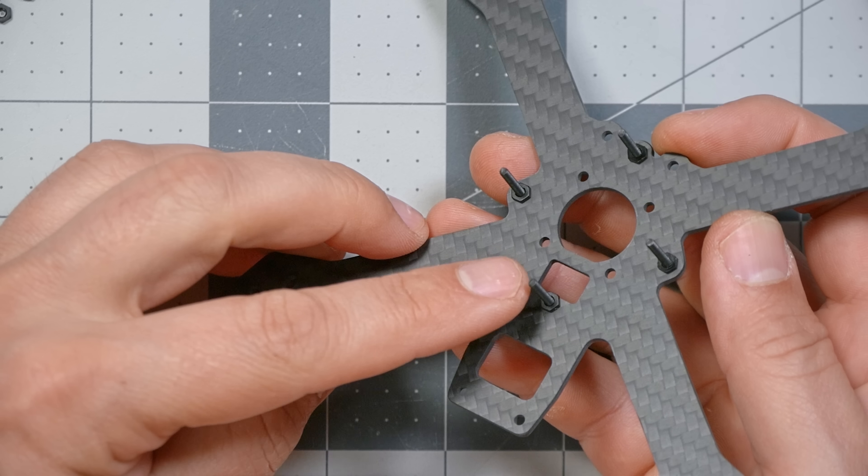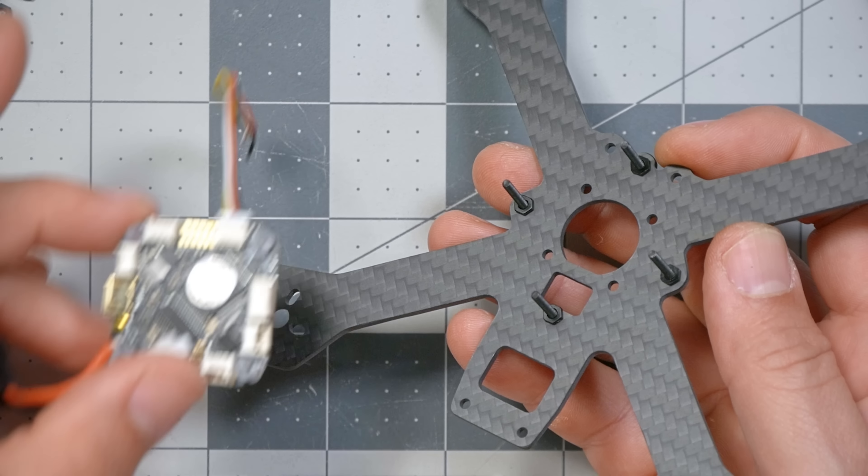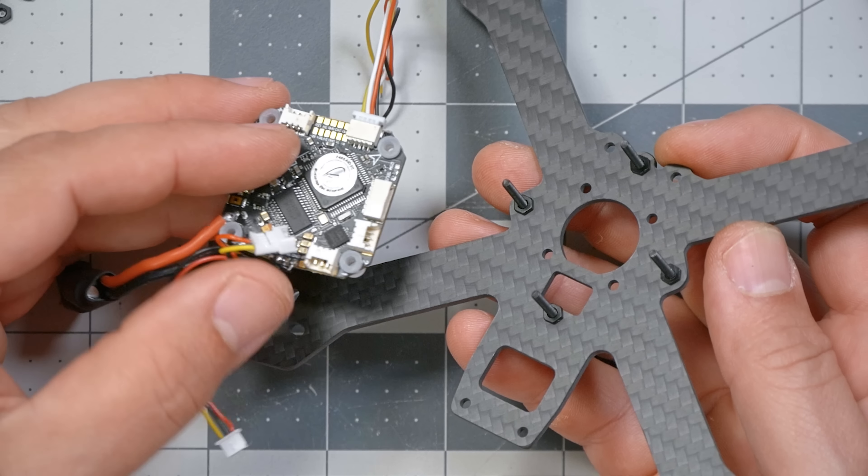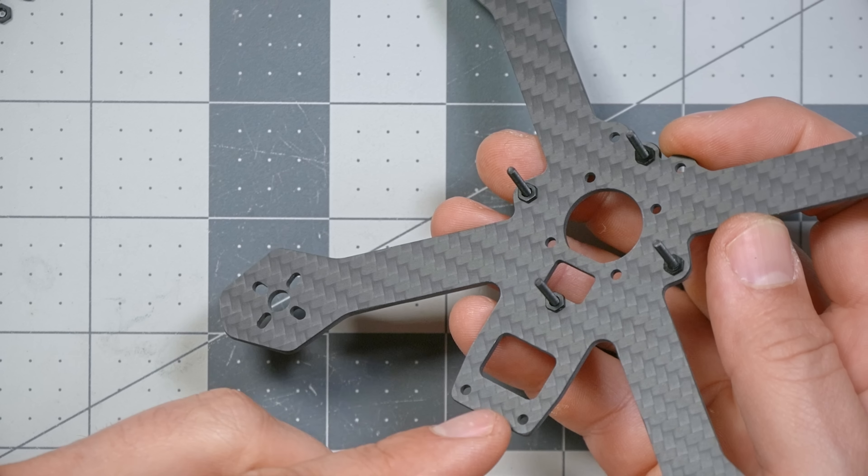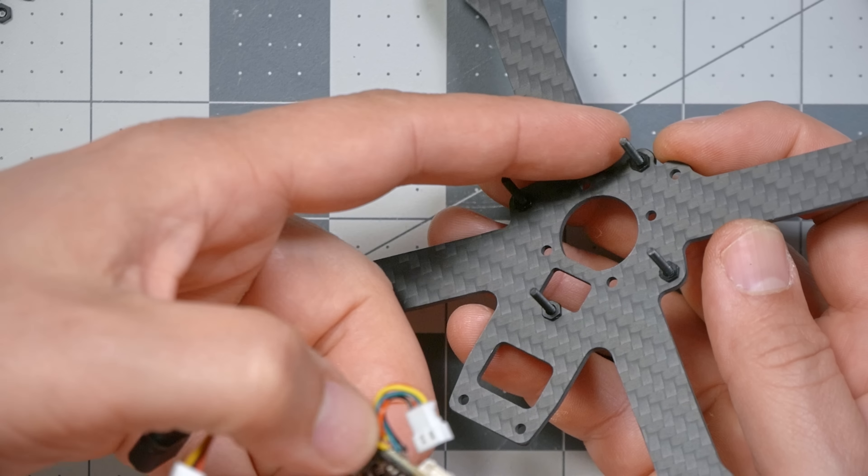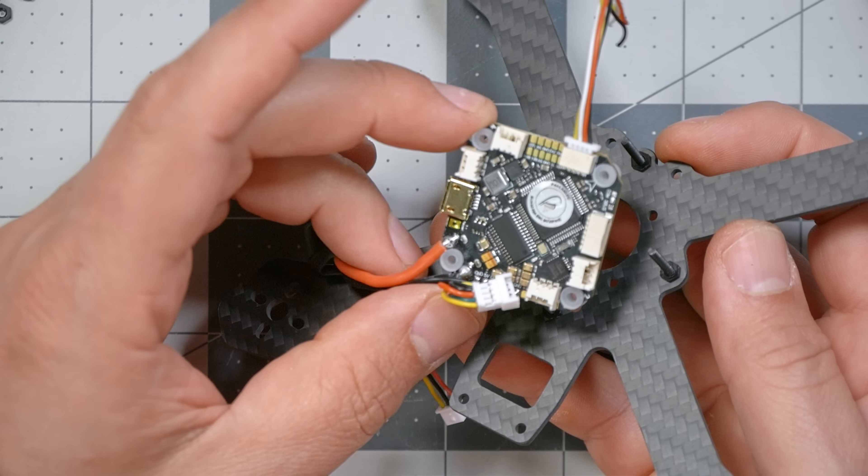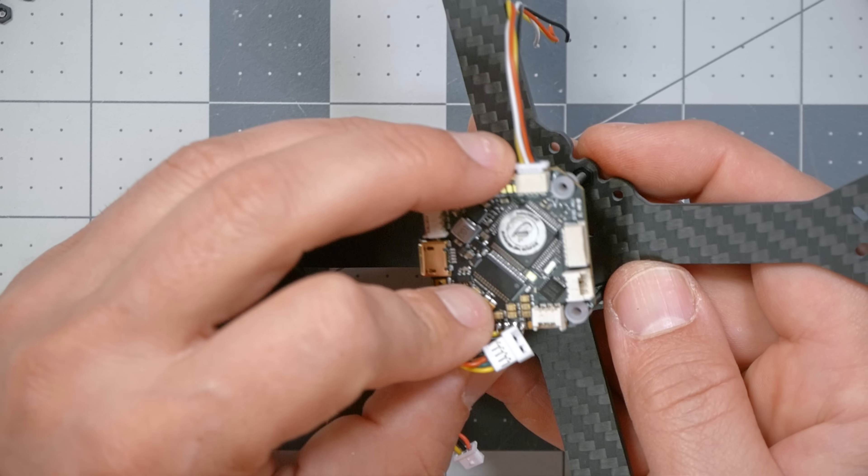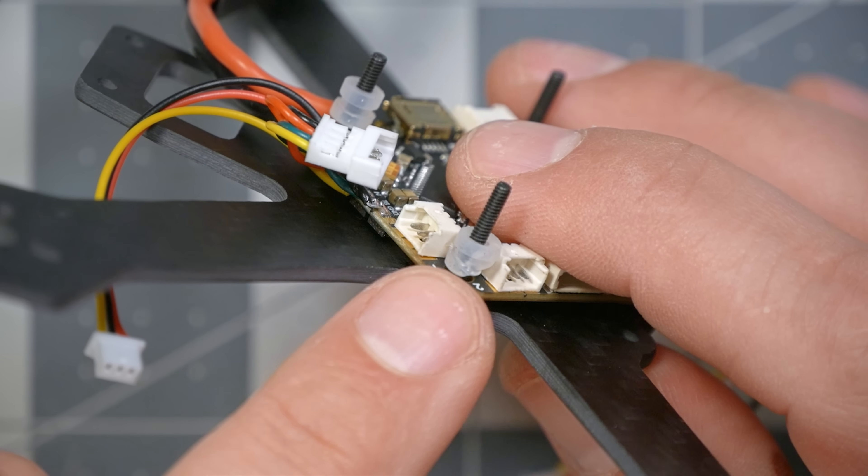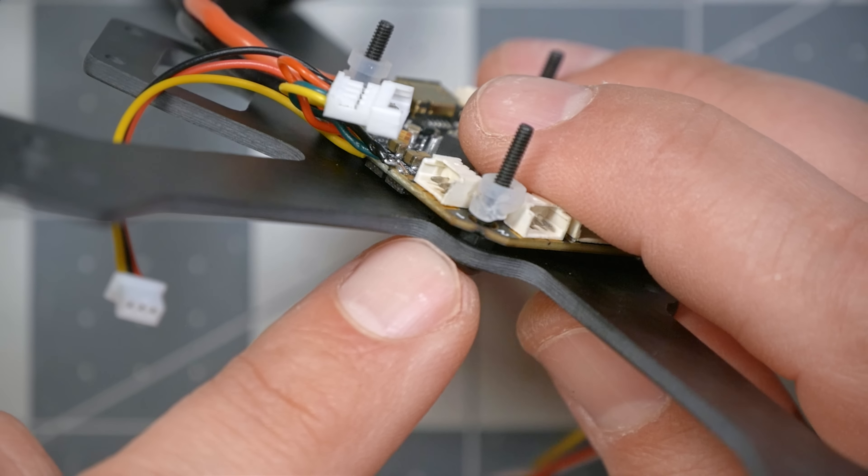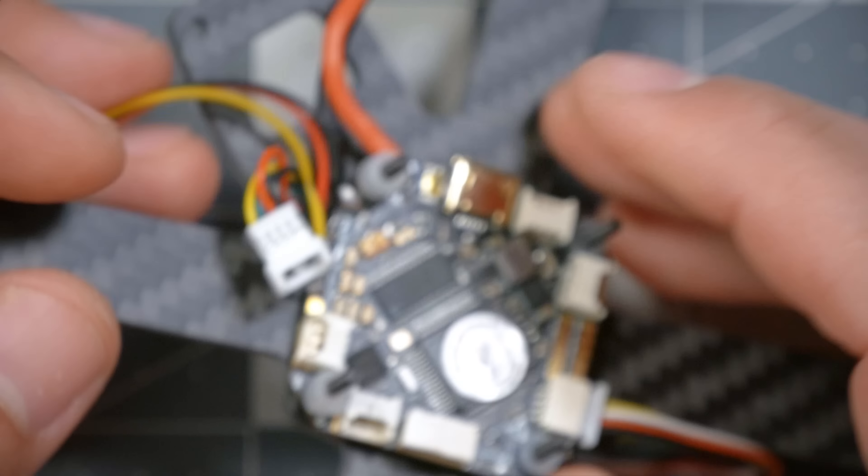Once the screws and nuts are placed, we're going to go ahead and slide the flight controller down on top of them. The back of the frame is here, and the front is here, and the pre-soldered power wire is going to go out the back. Watch out for this situation, where one of the soft-mounted gummies actually pushes up out of the flight controller. We're going to need to take this off and reinstall that gummy and do it again. Several of them did that.